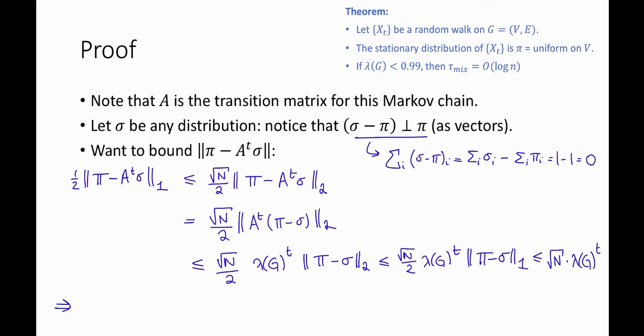So all this together is at most root of n times lambda of G to the t. So what that means is that if t is greater than or equal to log of the square root of n divided by log of 1 divided by lambda of G all times log of 2e, then the total variation distance between pi and A to the t times sigma is at most 1 over 2 times e.